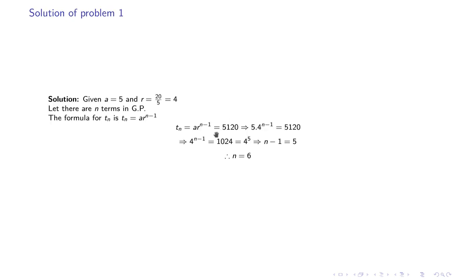For the given GP, the first term a is 5 and the common ratio, found by dividing 20 by 5, is 4. The formula for the nth term is T_n = a·r^(n-1). We substitute T_n = 5120, giving 5120 = 5·4^(n-1). Dividing by 5 gives 1024 = 4^5. Comparing powers, n - 1 = 5, therefore n = 6.